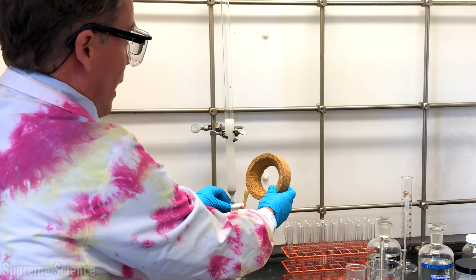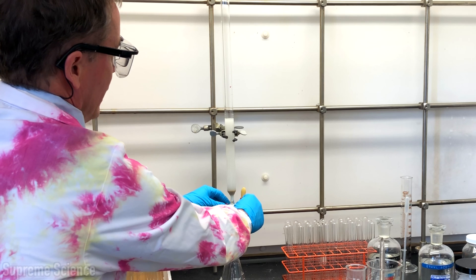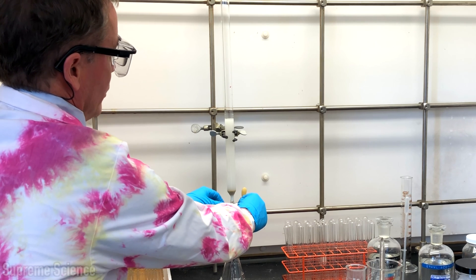And make sure you don't tap the column with anything metal. When the solvent gets to the top of the silica gel I'm going to turn the stopcock off.